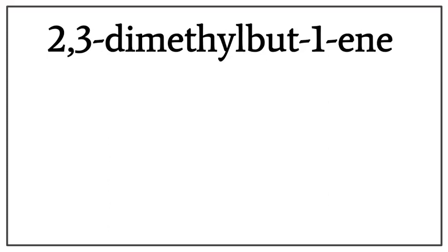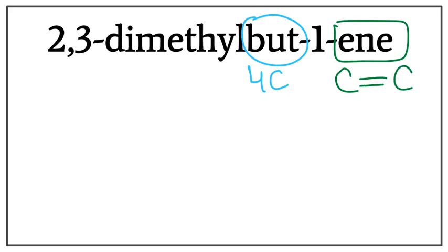Let's draw the structure for 2,3-dimethyl-but-1-ene or 2,3-dimethyl-butene. But right here tells us that there are four carbons present in the longest carbon chain. This ene right here tells us that this is an alkene, meaning that there is a double bond present between the carbons.